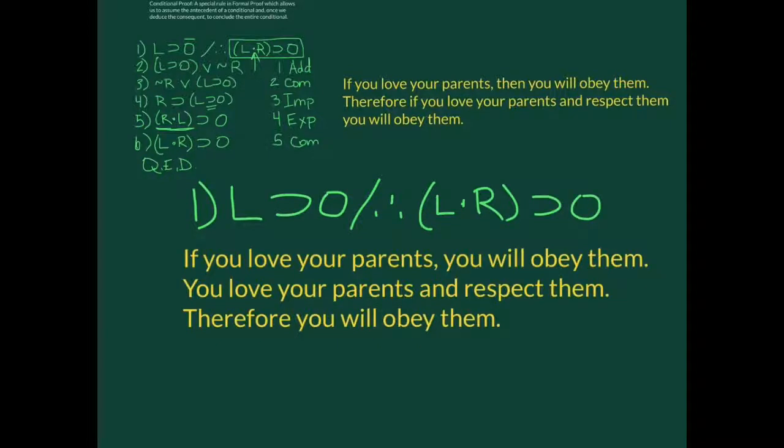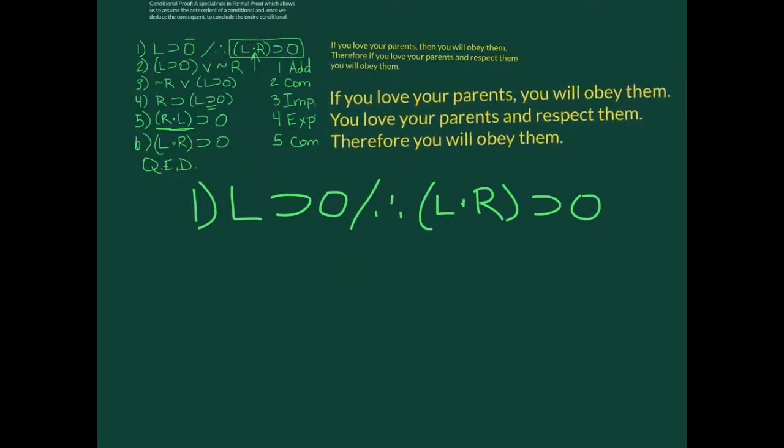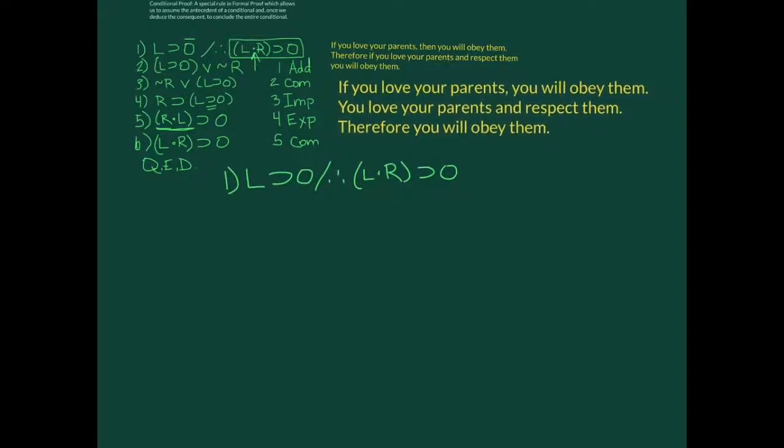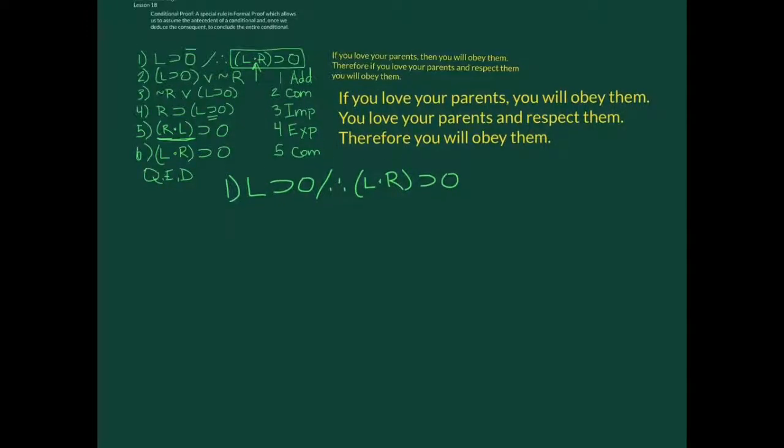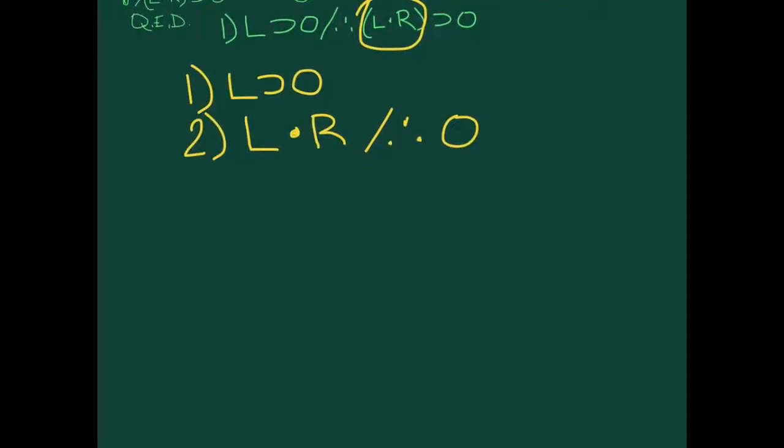If you love your parents, then you will obey them. Therefore, if you love your parents and respect them, you will obey them. Let's rewrite it. If you love your parents, you will obey them. Period. You love your parents and respect them. Period. Therefore, you obey them. Now, if we take this statement and we write it, you will see that it means the same thing. And it's easier to prove. So love, then obey. And love and respect. And conclusion. Therefore, oh, now the difference is just right there.